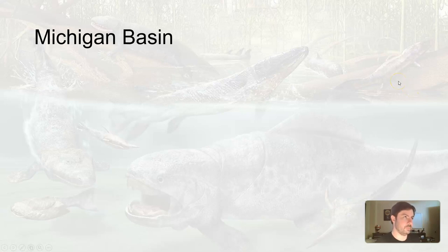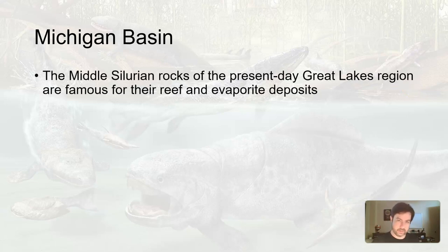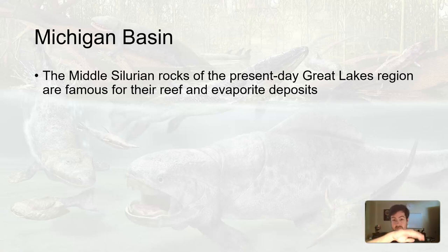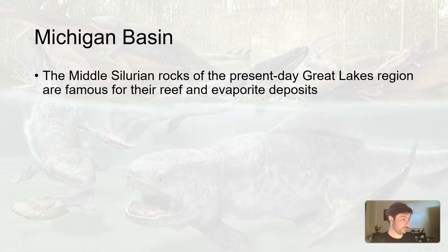Also during this Tippecanoe sequence, we get a number of basins forming — for example, the Michigan Basin. Because we have the ocean coming in, we get limestone being deposited. We have reefs being developed, like coral reefs — those existed in what is now North America because Laurentia was right along the equator at this point, right on the tropics. So if it's covered in water and reefs can begin to form, we had oceanic reefs in parts of North America, including Michigan.